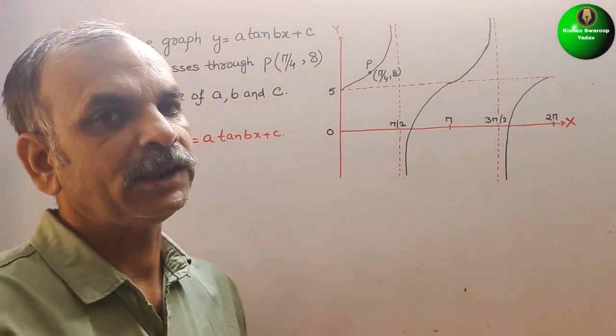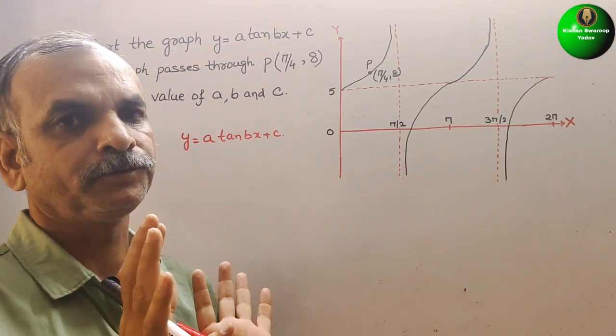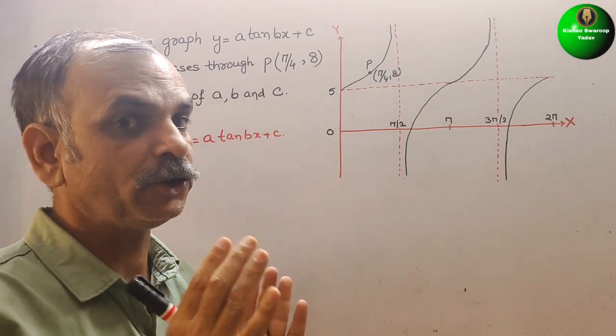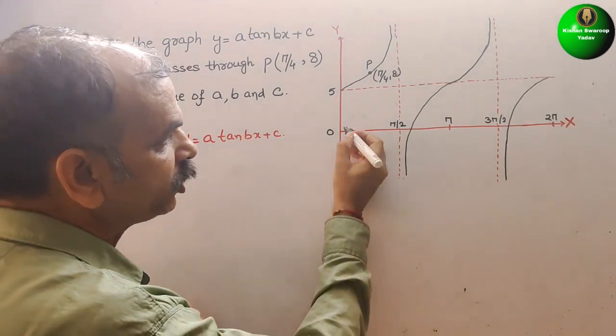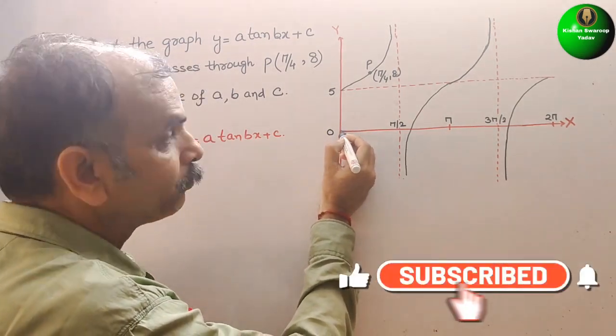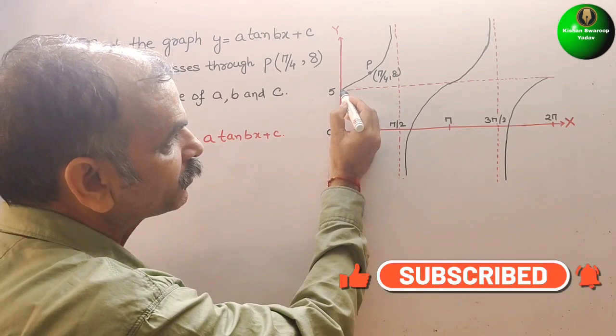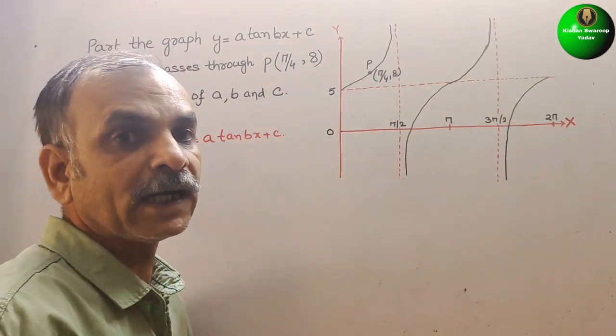Now, if you see this, we know that tan 0 is 0. So you can see here, the 0 has shifted. From here it should start. But what they have done? They have started with 5.